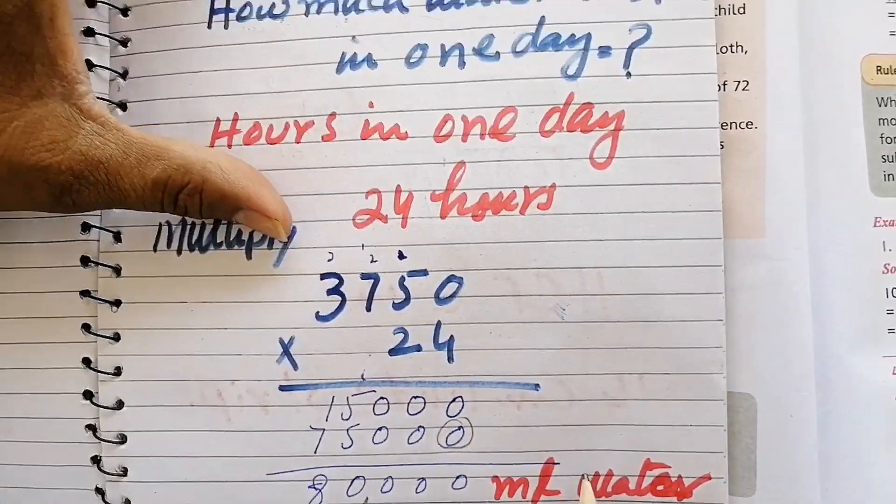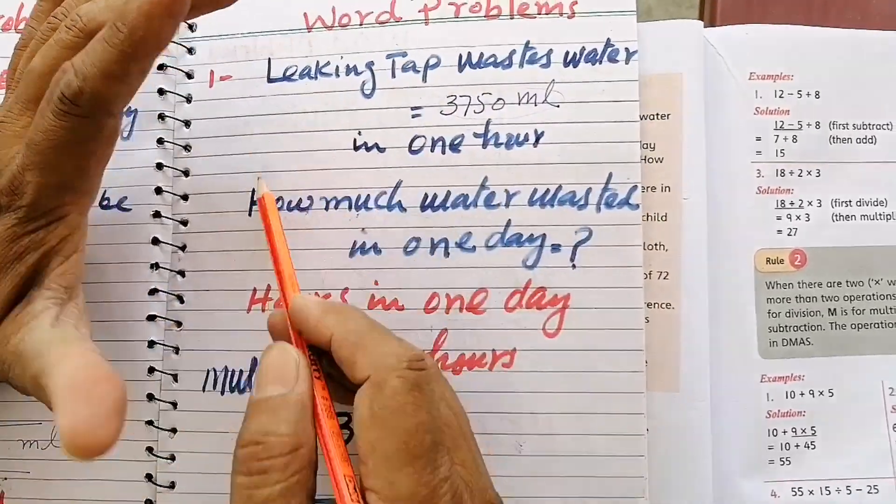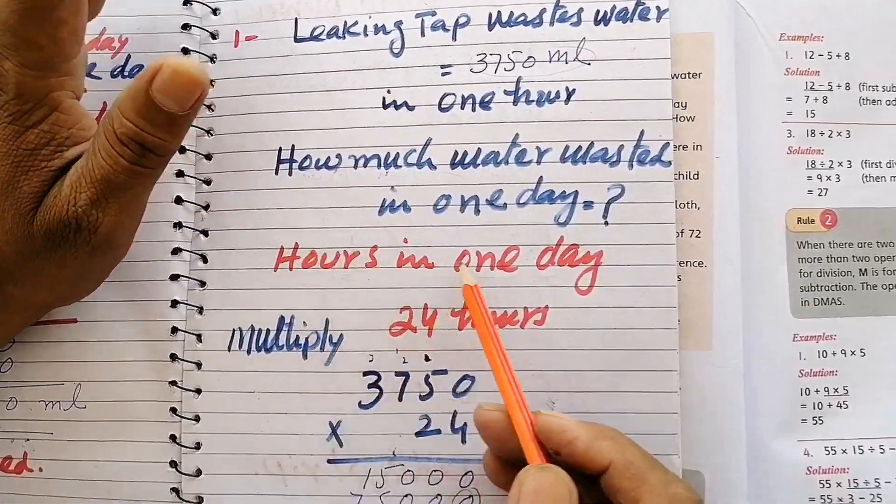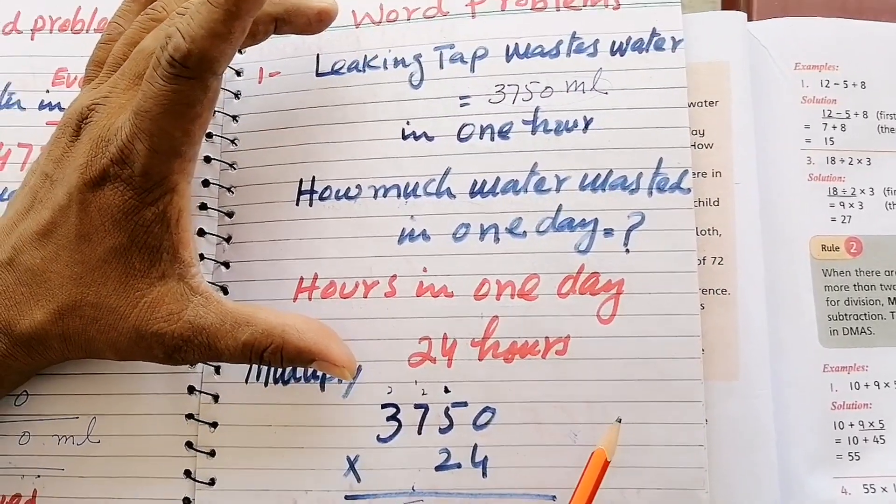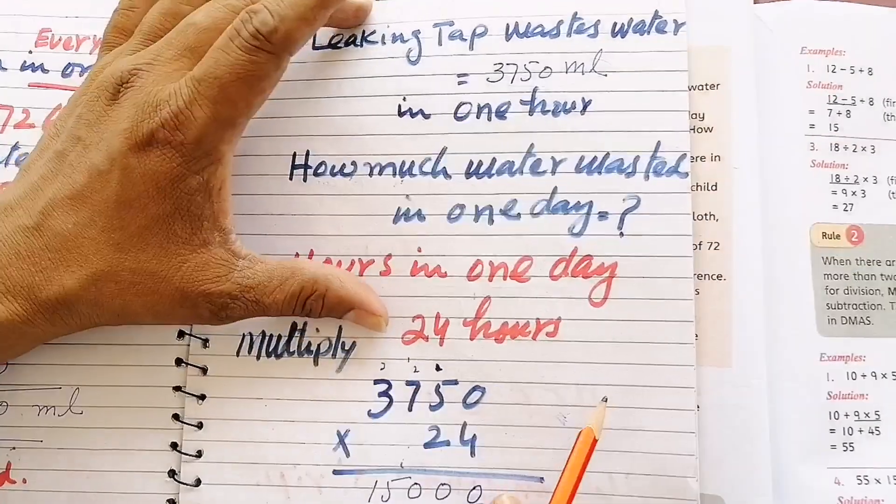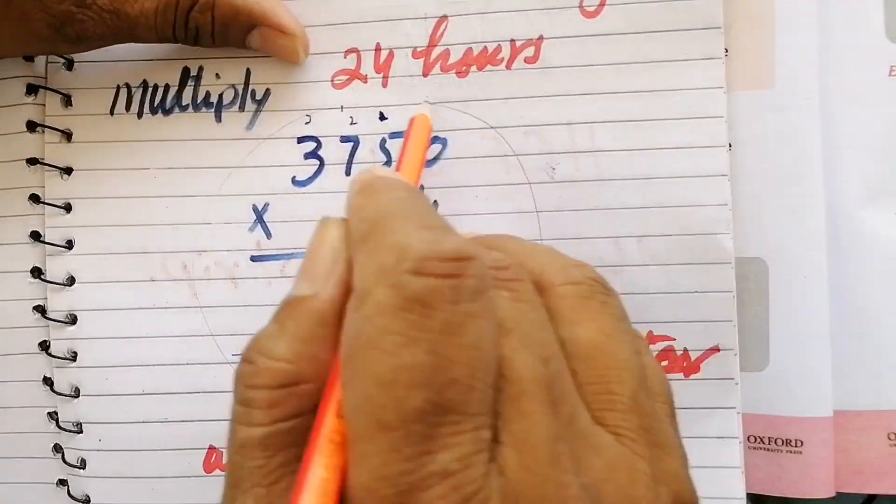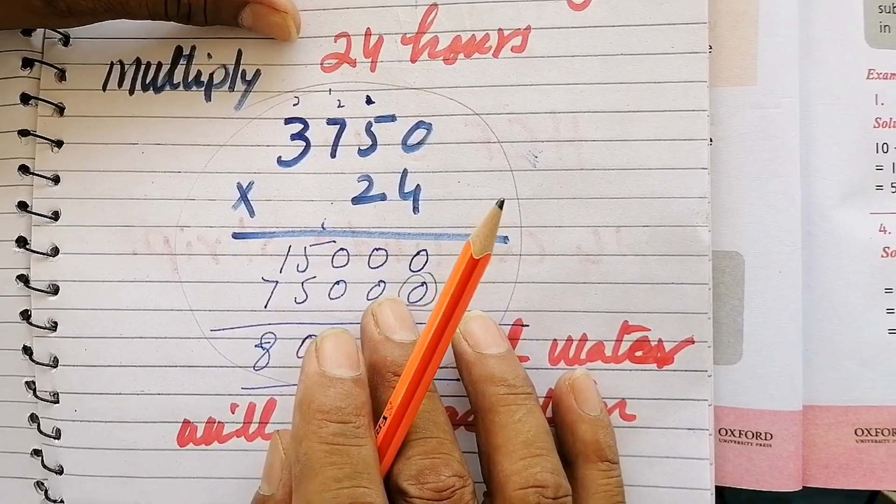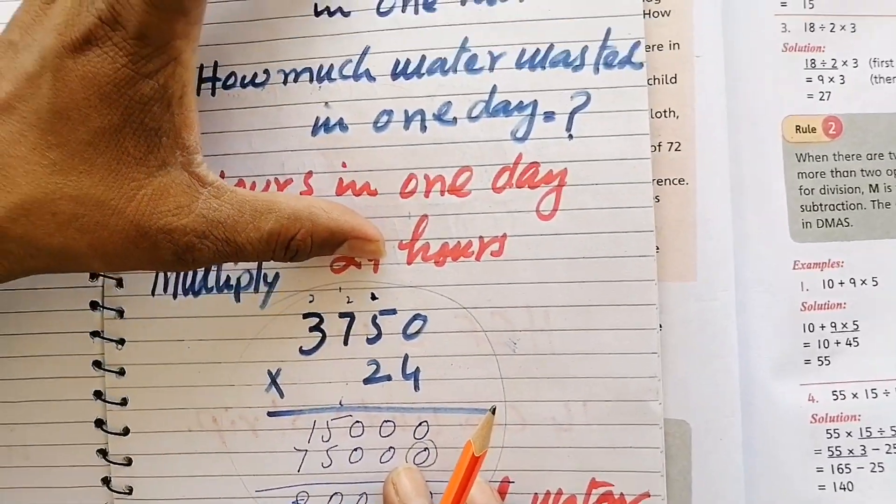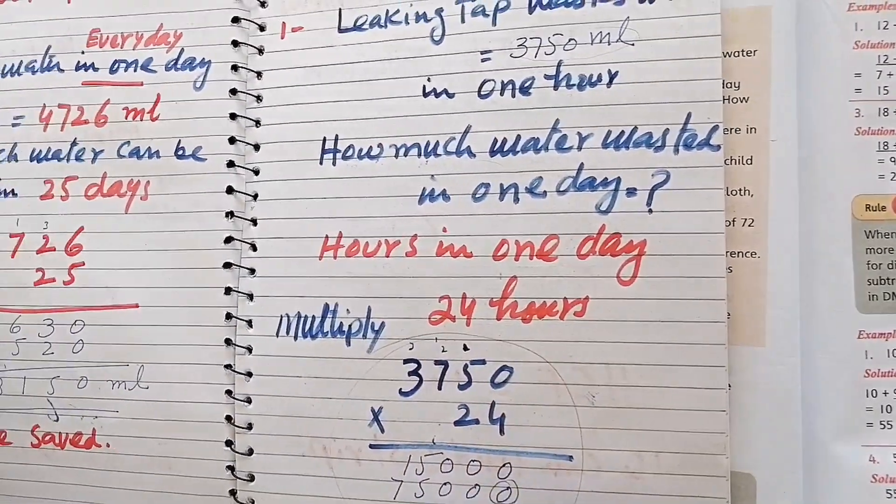Students, I want to tell you that if you don't want to write all this explanation, you can only do the multiplication and show the answer. This is just for you to explain the process.